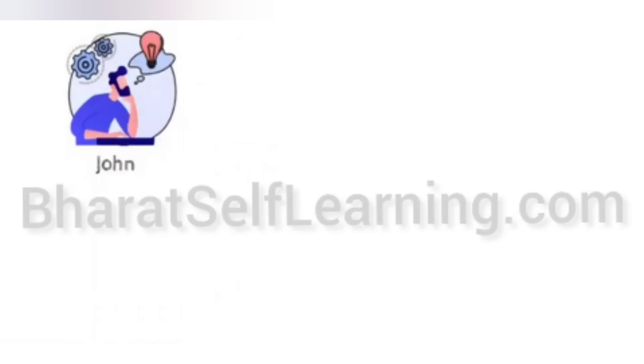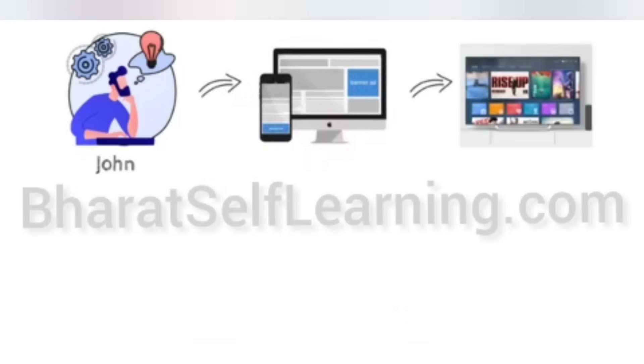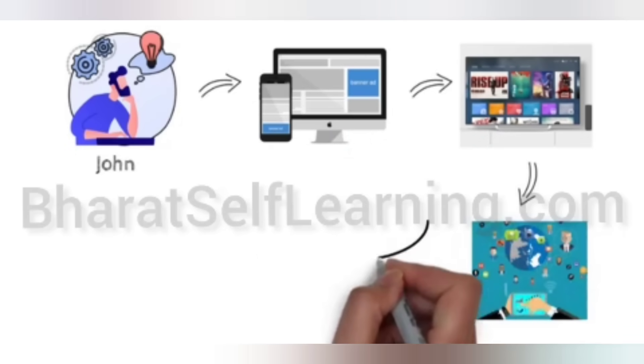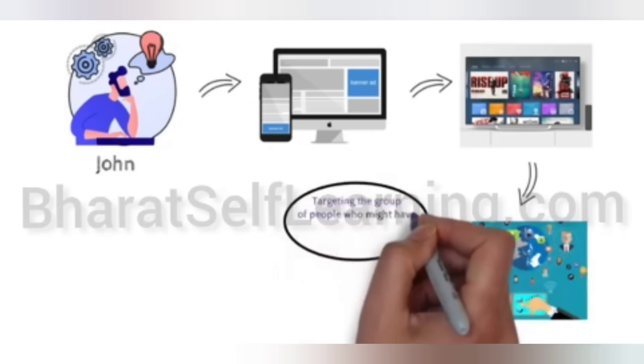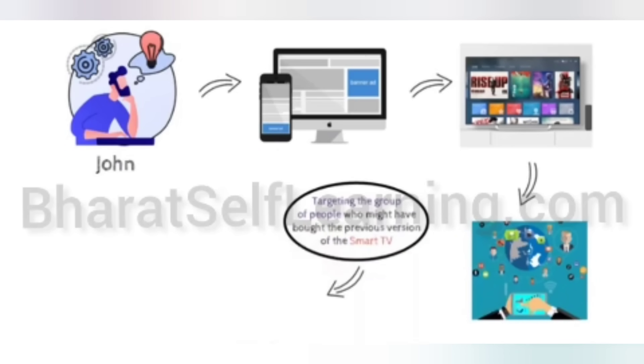John, who is a digital marketing professional, is running an online advertising campaign to promote a new smart television. John starts by targeting the group of people who might have bought the previous versions of the smart TV in question.